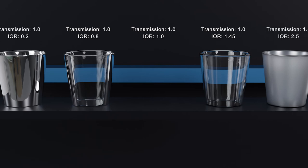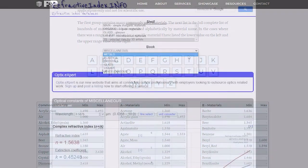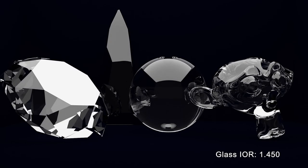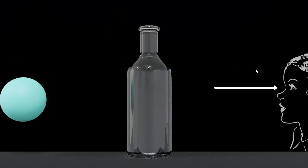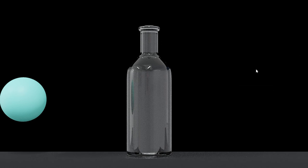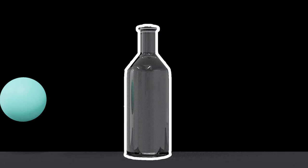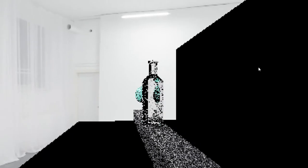There are several IOR resources available online — I'll provide a couple of links in the description. Here are some common transmission IOR values rendered. When light hits a glass object, some of the light reflects back to us, enabling us to see the glass object. The rest of the light passes through the glass and reflects off objects behind the glass, enabling us to see them. Roughness affects the light reflecting from the surface of the glass, while transmission roughness affects the light that passes through the glass.